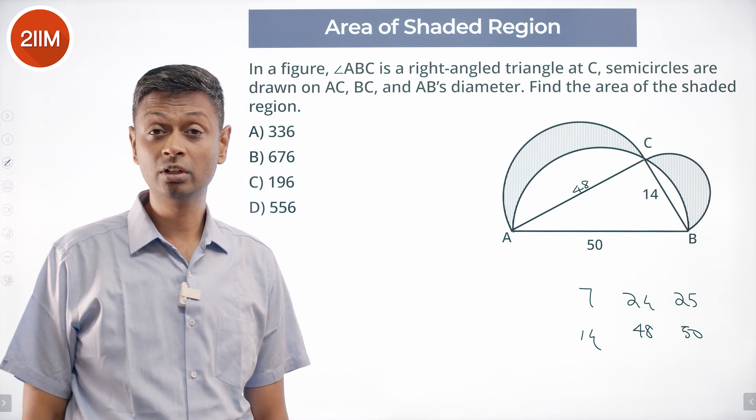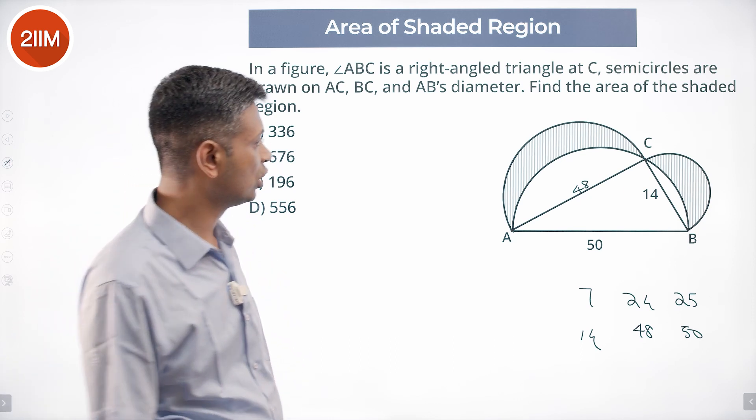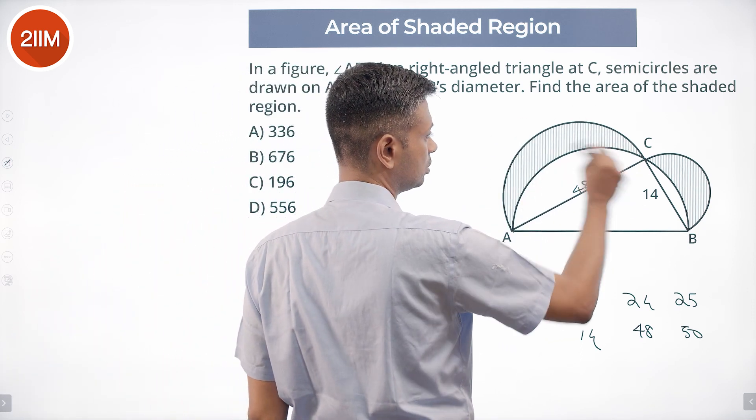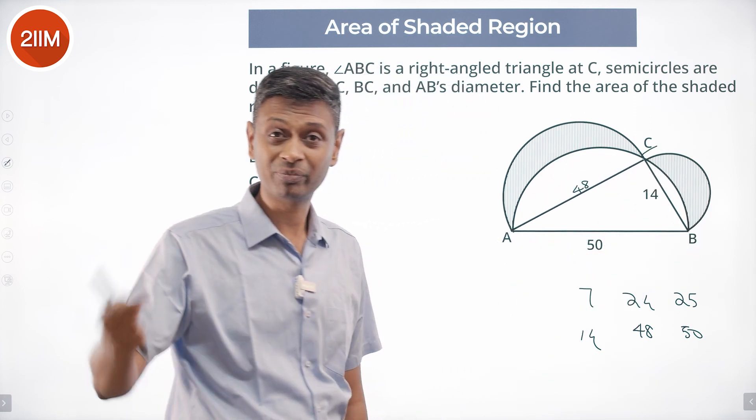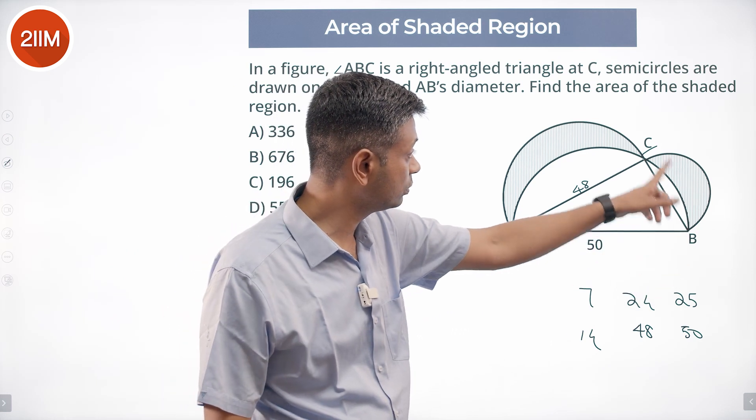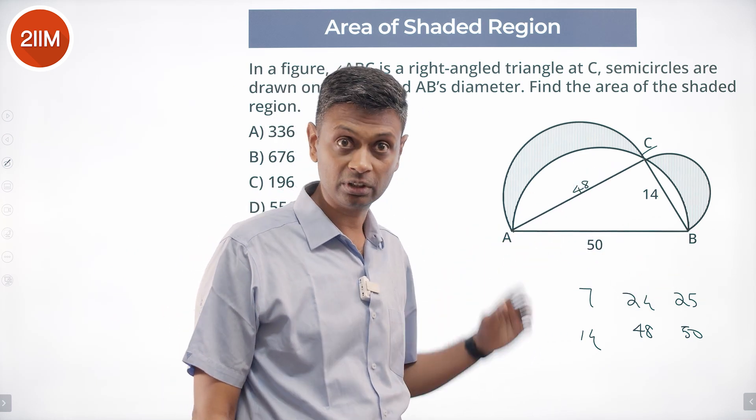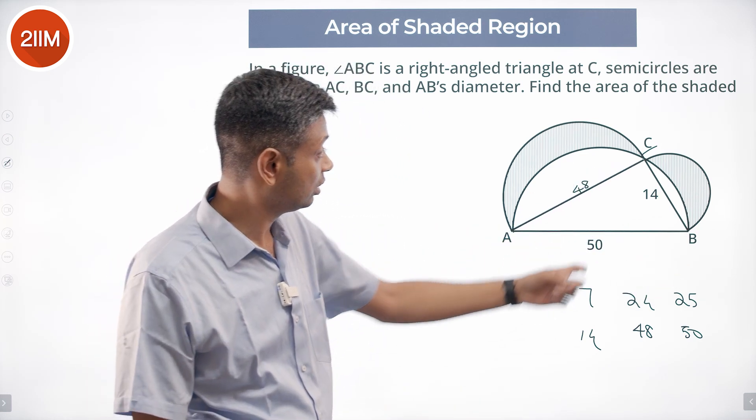Find using a wonderful approach. We find the area of this semicircle, to that we add the area of this semicircle, and from that we subtract the area of this semicircle. When we do that, this gets added and that gets left out.